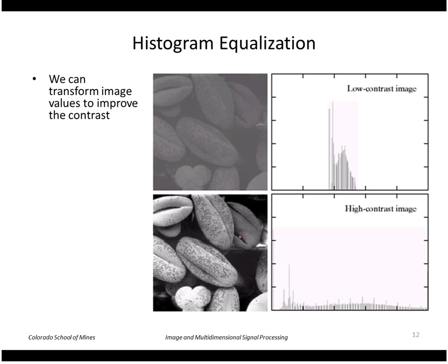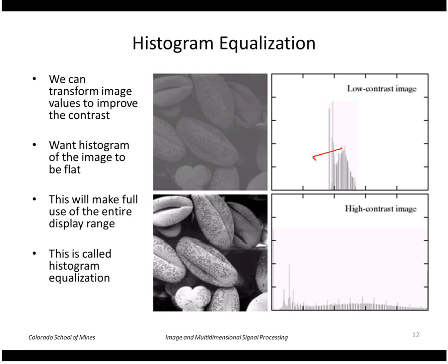So let's look at the use of histograms to enhance images with a technique called histogram equalization. If we have an image where the histogram is bunched up in one region, that generally is a poor contrast image. If the histogram is spread out like this, that means we use all values of the output range and we have a better contrast image. So we want the histogram to be flat, and the process of doing that is called histogram equalization.